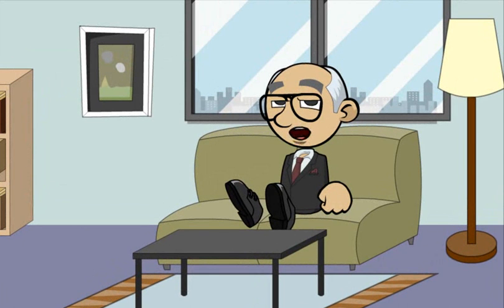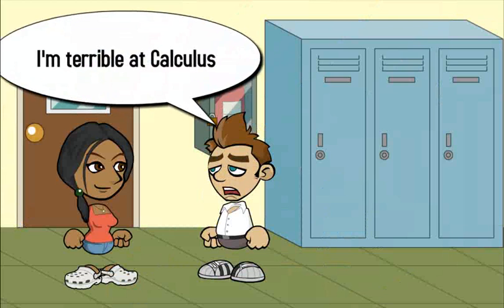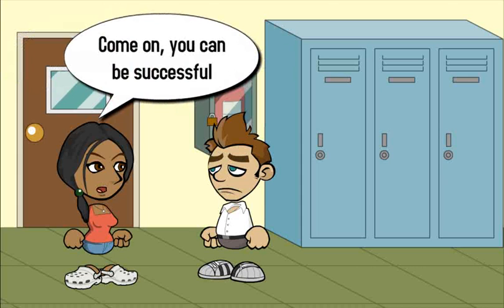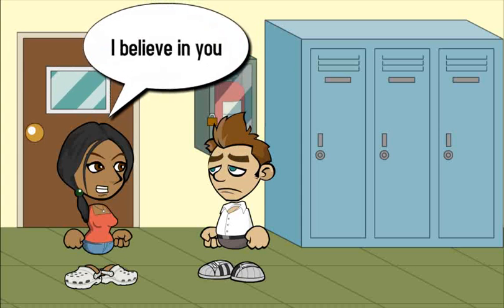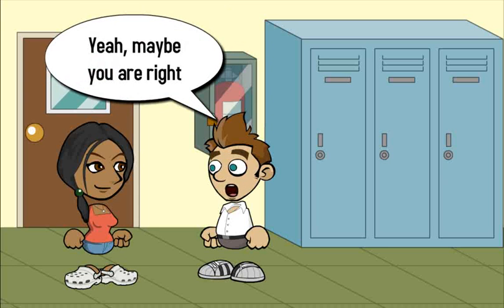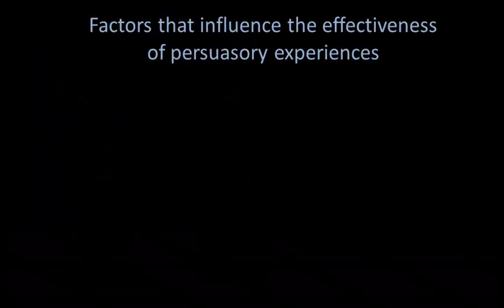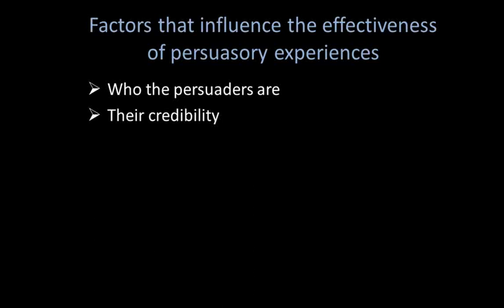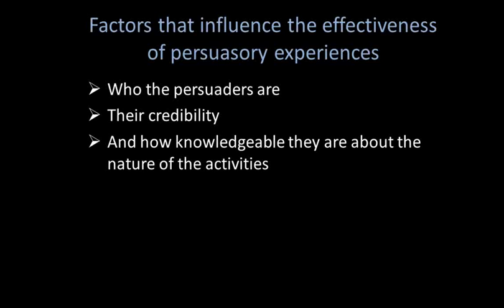The third source of self-efficacy is verbal persuasion, and is widely used in order to persuade people to believe that they possess capabilities that will enable them to achieve what they seek. Social persuasion may be limited in creating long-lasting increases in self-efficacy, but it can contribute to successful performance if the desired appraisal is within realistic bounds. People who are persuaded verbally that they possess the capabilities to fulfill given activities are likely to put in greater effort and sustain it, rather than doubt themselves and dwell on personal deficiencies when problems arise. Whether or not one will depend on persuasory opinions is determined by who the persuaders are, their credibility, and how knowledgeable they are about the nature of the activities.